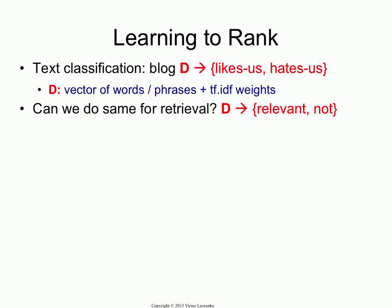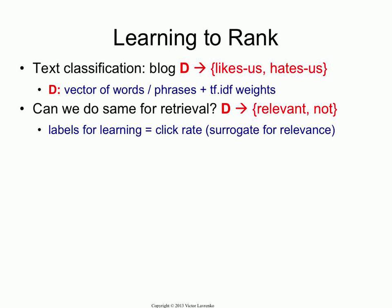Now, if you're building a search engine, could we do the same thing for retrieval? Could you use the same mechanism to predict if the document is going to be relevant or non-relevant? You've got a query, you've got a set of documents. Can we learn to classify documents into relevant and non-relevant? Maybe we can use something like clicks as surrogates for relevant and non-relevant examples. So can we do it?